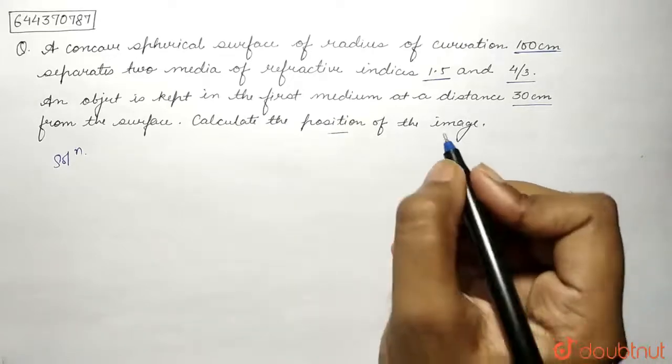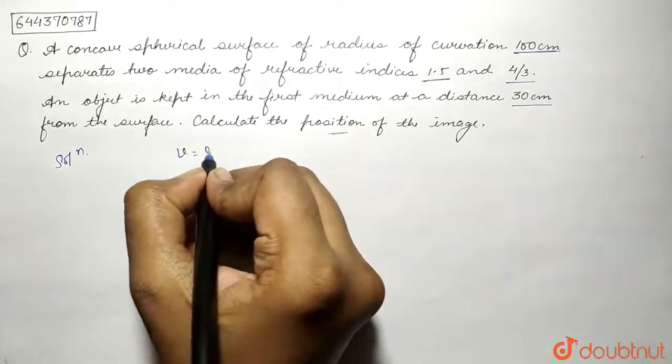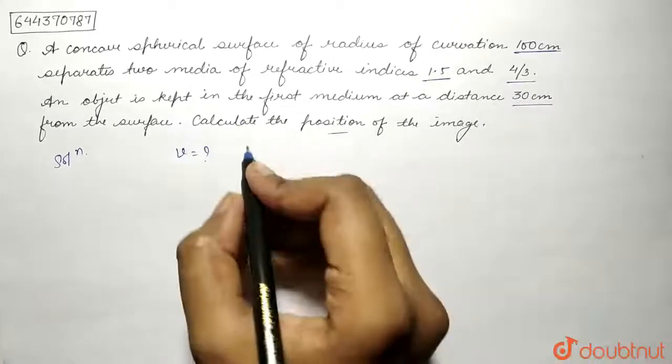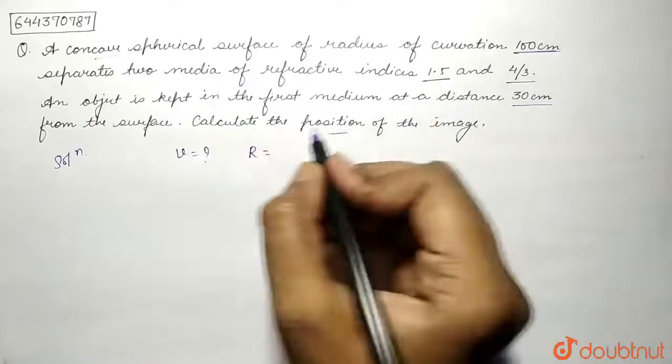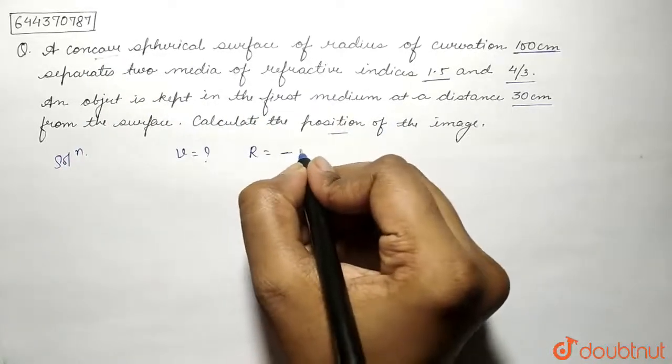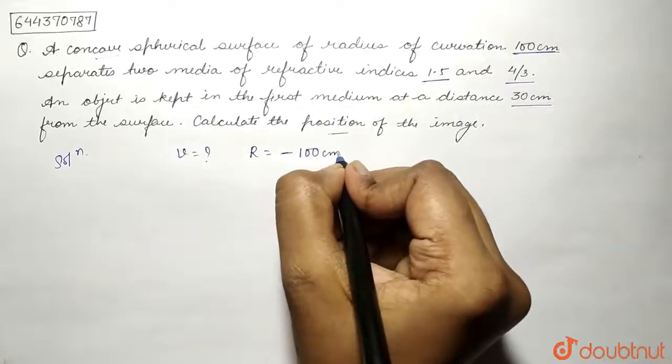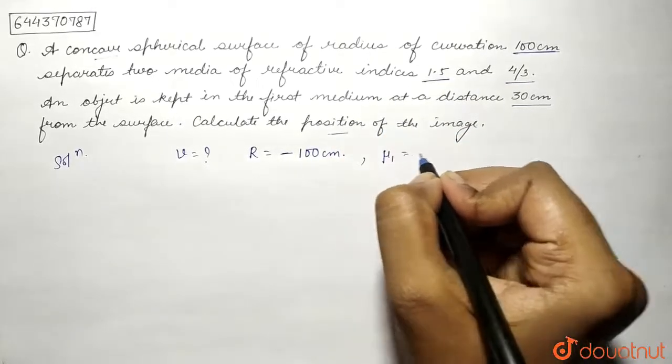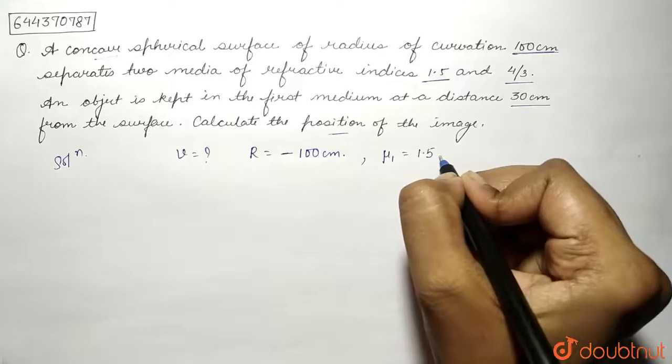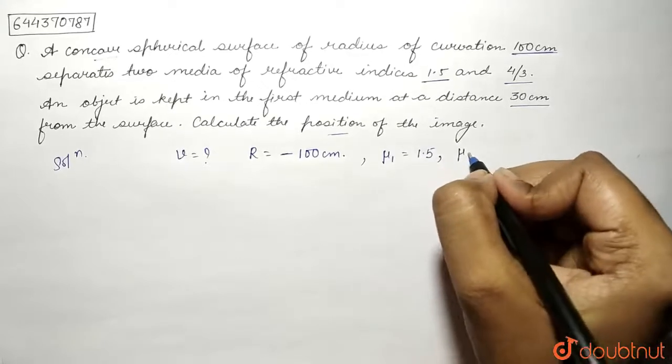So what we need to find is v. The radius of curvature for the concave spherical surface will be negative, so R equals -100 centimeters. Refractive indices: μ₁ is 1.5 and μ₂ is 4/3.